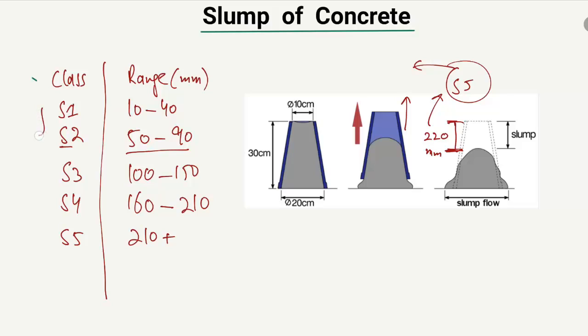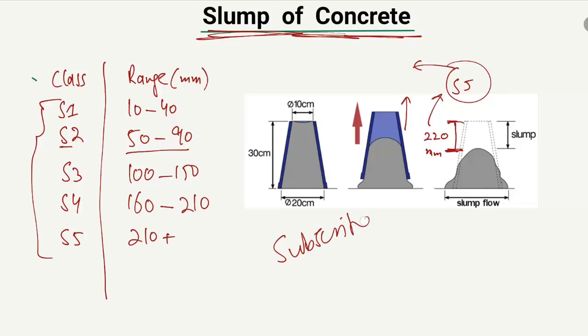Each of these classes is used to define different slump requirements, and accordingly we use different concrete mixes depending on the project. I hope you guys understand what slump is and why we do the slump test — to check the workability and flowability of the concrete. Don't forget to subscribe to our channel for daily civil engineering videos. Thank you for watching.